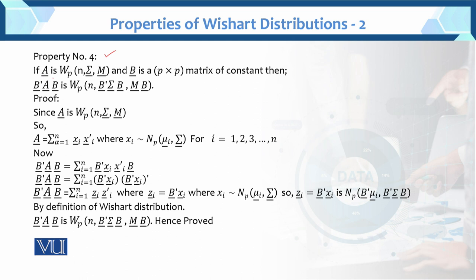If A is a Wishart with these parameters, and B is a matrix of constants — specifically B is a p×p matrix of constants — then B'AB is also equal to the Wishart distribution with N degrees of freedom.